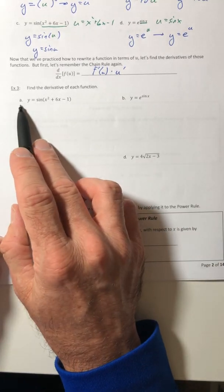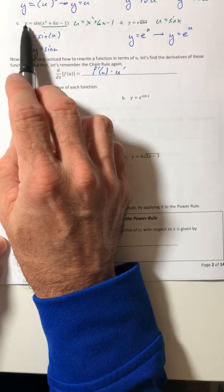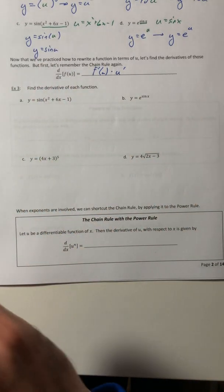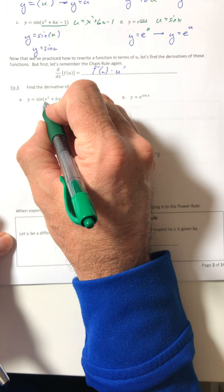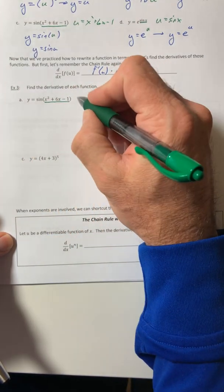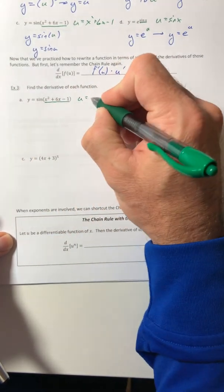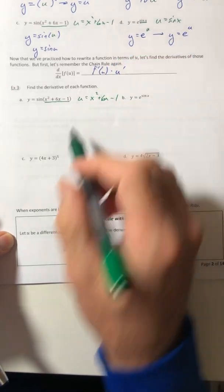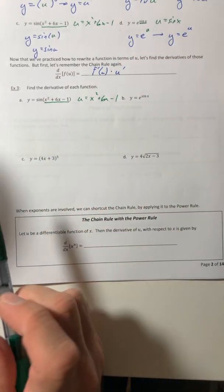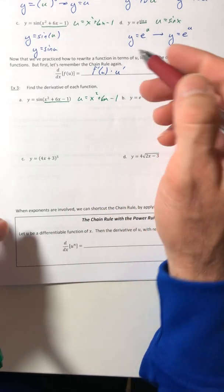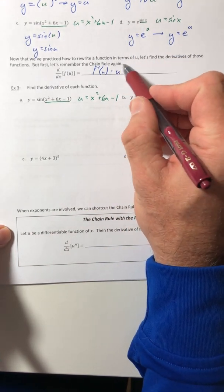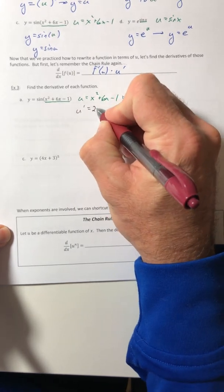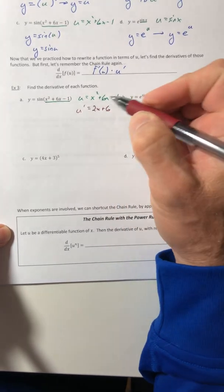Okay, so example a, that was the same function from example 2c. So I know what my choice of u is. Remember that was the inside stuff? So that was the x squared plus 6x minus 1. Well, now that I'm interested in the derivative, I'm going to get the derivative of u prime, because I need it. That's in the formula. So u prime is going to equal 2x plus 6.